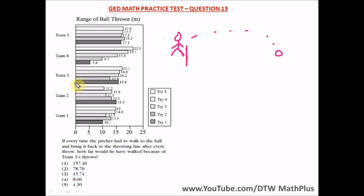The first one, when he throws the first try, the first try for team three, the question is focusing on team three here. The first try was 15.8 meters, so he walks 15.8 meters to pick the ball.